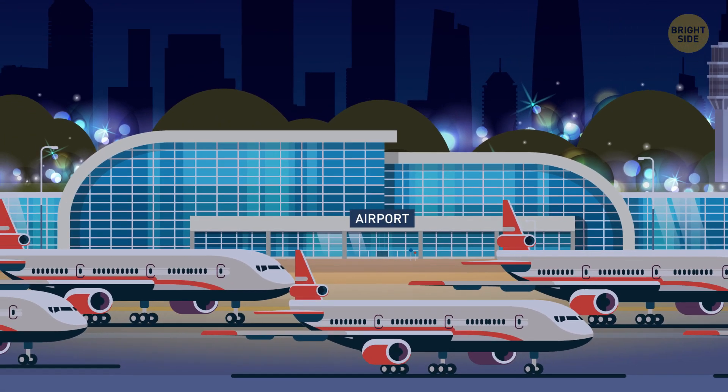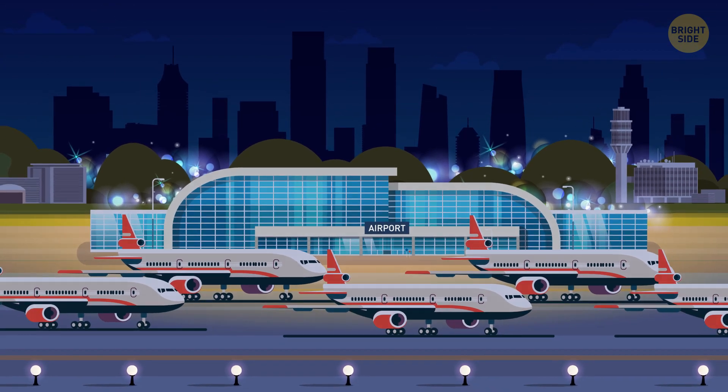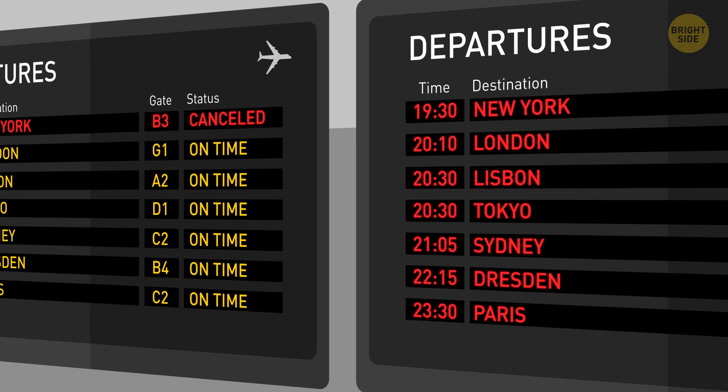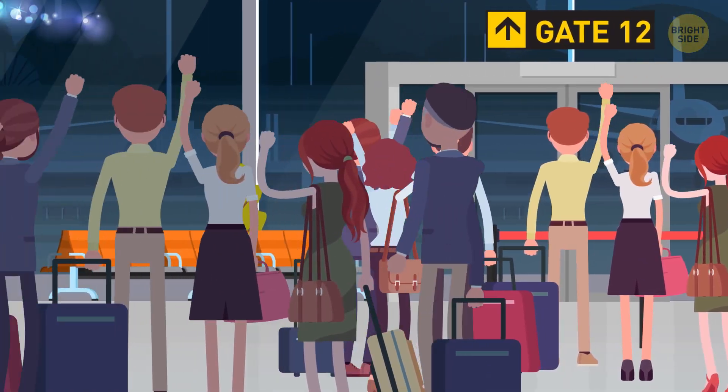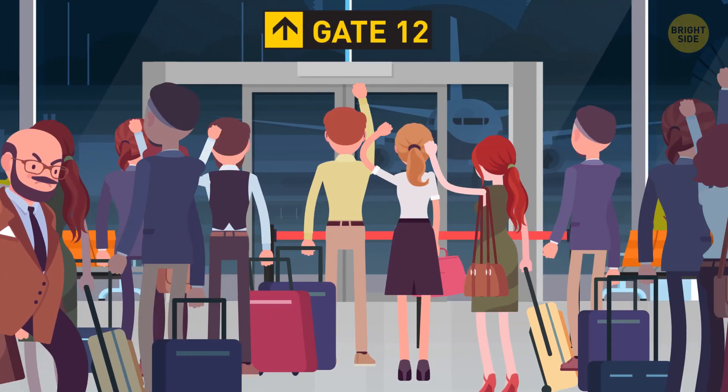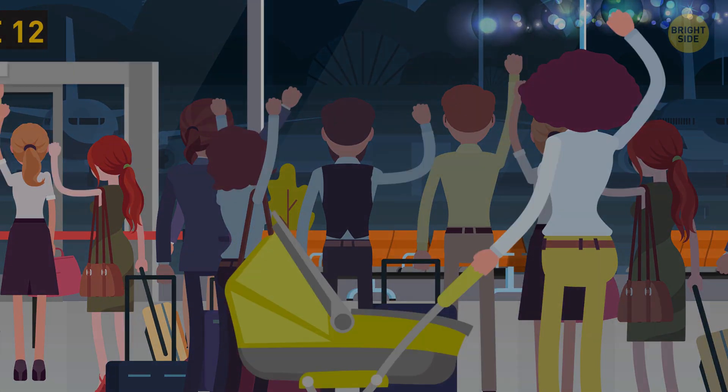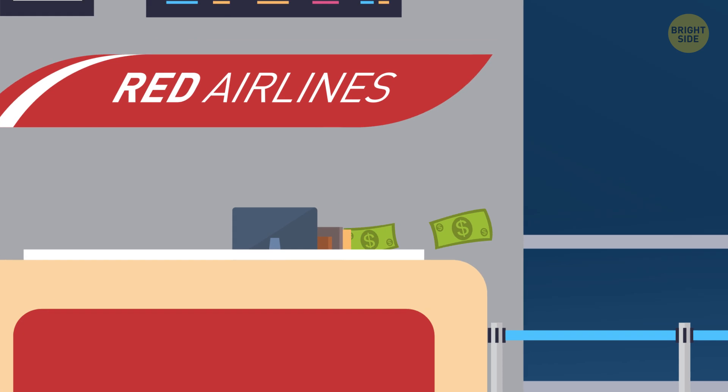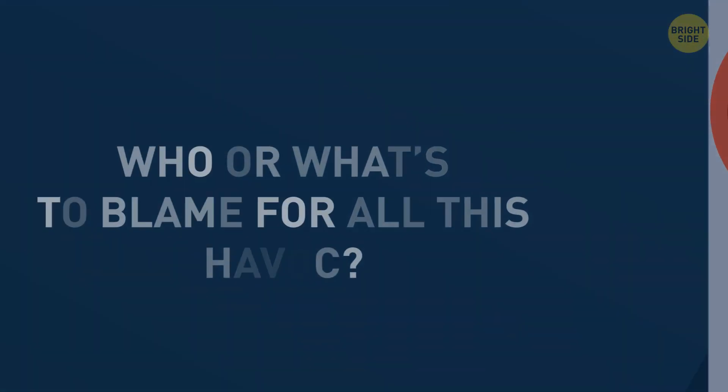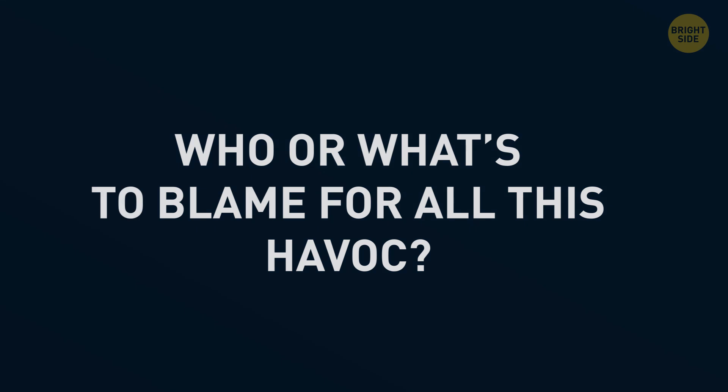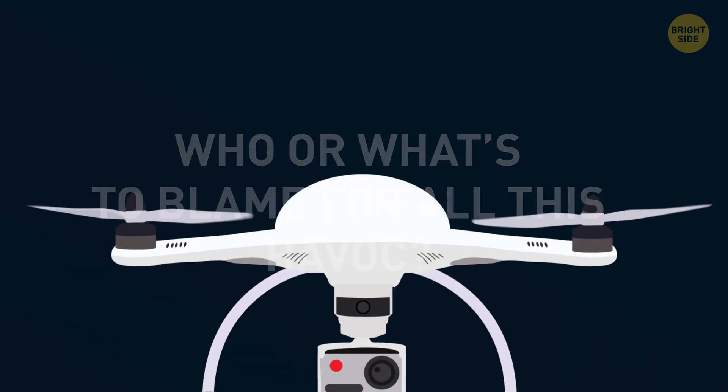So here's what's happening. The airport is at a standstill. Hundreds of flights are canceled. Thousands of anxious passengers are crowding near their gates. Some are pacing nervously, others trying to calm down crying babies. Airlines are losing thousands of dollars for every hour of the delay. So, who or what's to blame for all this havoc? Drones.